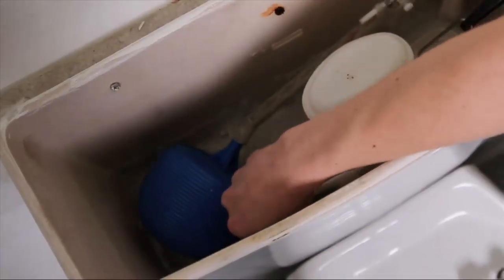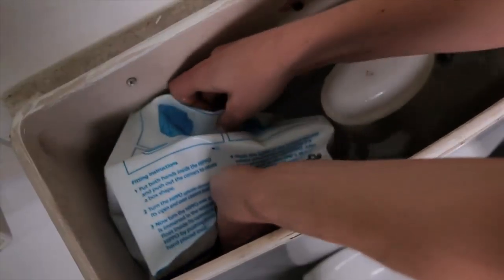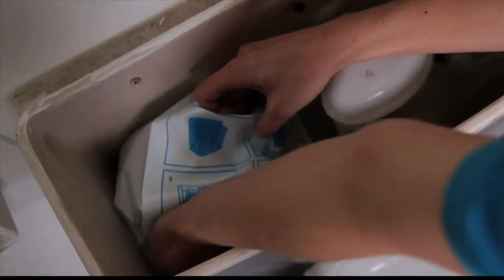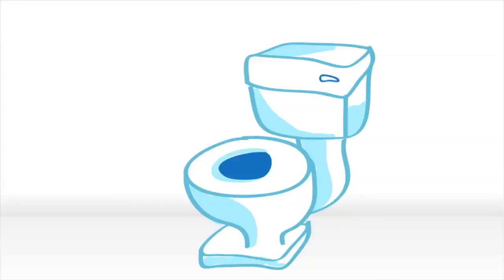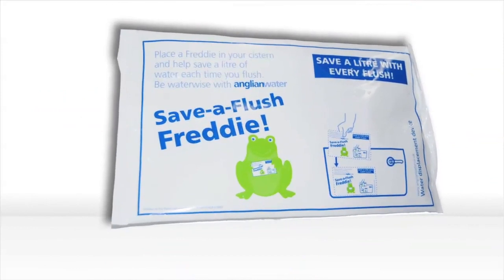Fitting the device is easy, and anyone can do it. You don't need any tools, and it takes seconds. For standard toilet cisterns that flush around 6 litres, we provide you with a Save-A-Flush Freddy.